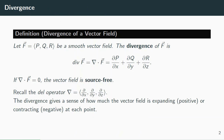Mathematically, the divergence is just the gradient dotted with the vector field. So this grad operator just says take partial x, partial y, partial z. You take the x partial derivative of the p part of the vector field, the y derivative of the q, and the z derivative of the r, and then add those together. That's the divergence of a vector field.